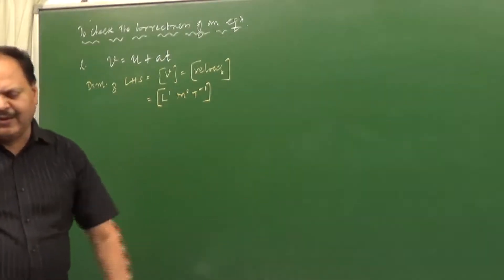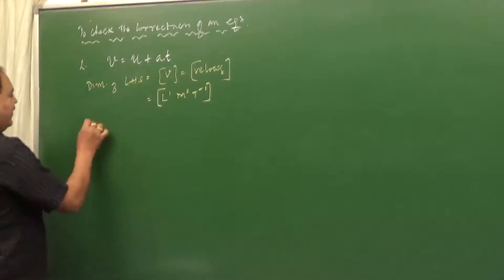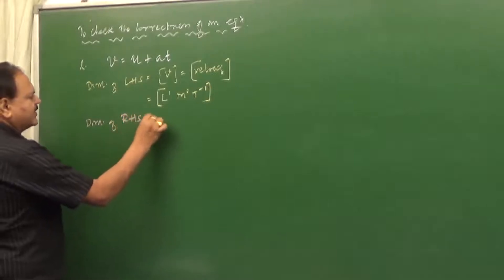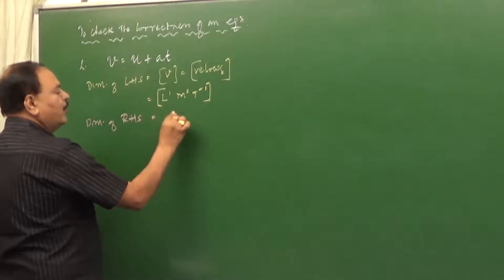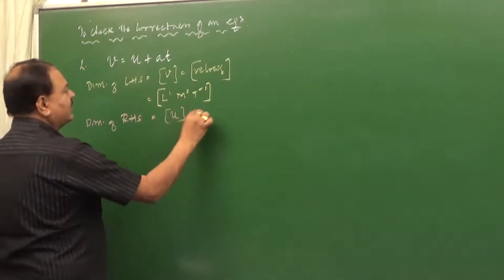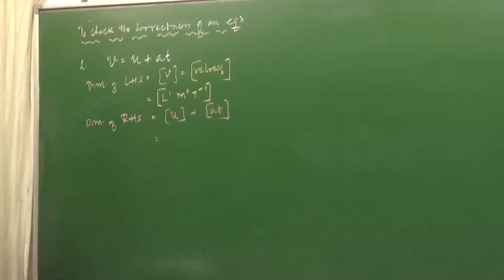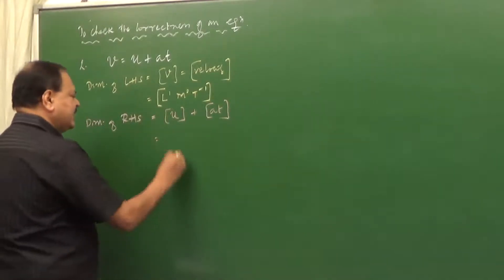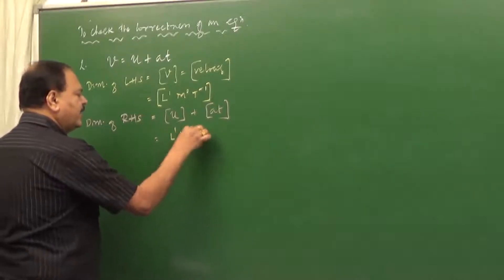You can see the dimension of the LHS is L¹M⁰T⁻¹. Now, if you want to check this, take the dimension of the RHS. The RHS starts with U, which is initial velocity — same as final velocity — so its dimension is also L¹M⁰T⁻¹.